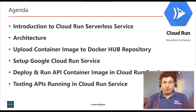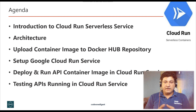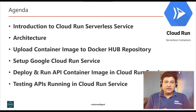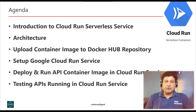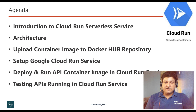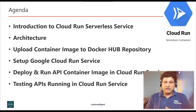I'll explain what we are trying to run and demonstrate with an architecture diagram, then I'll show you how to upload the container image to Docker Hub repository, how to set up Google Cloud Run service, how to deploy and run the API container image in Cloud Run service, and finally testing the API running in Cloud Run service. This is a very simple agenda we'll stick to today.